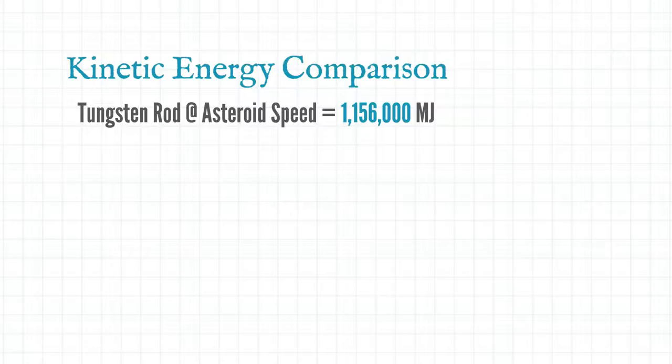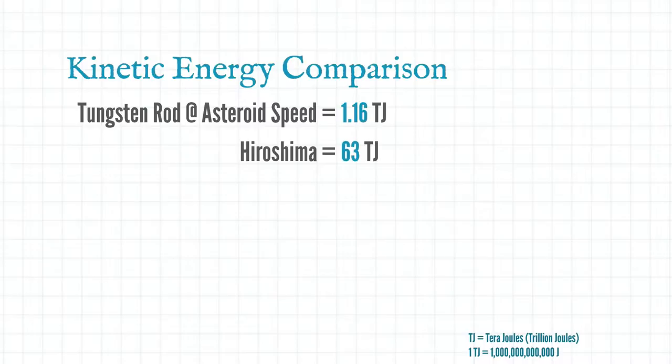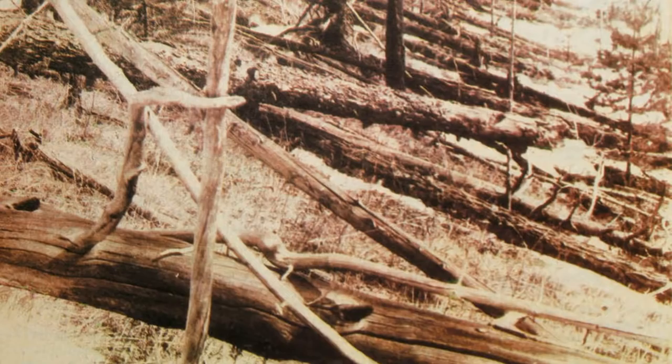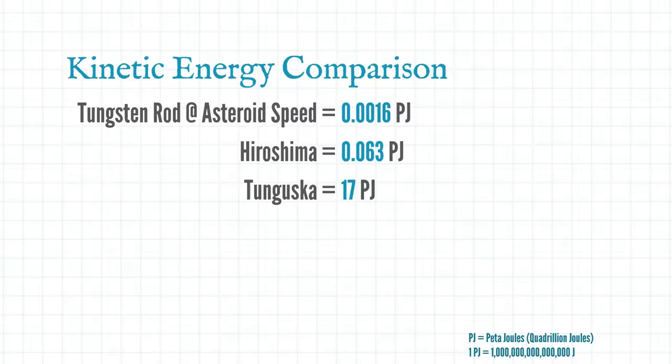Now before we get on to the relativistic bit there's a few other impacts we need to know about for comparison and in order to understand these big numbers we're going to have to up the scales again. Our tungsten rod traveling at asteroid speed is 1,100 gigajoules which is 1.16 terajoules. And now we can nicely compare it to Hiroshima which had the energy of 63 terajoules. Now we're going to move up another three orders of magnitude to petajoules which is basically a quadrillion joules. In 1908 a large explosion occurred in northern Russia. This is called the Tunguska event and it's generally attributed to the airburst of a meteor. This event flattened 2,000 square kilometers of forest and put out 17 petajoules of energy. This is thousands of times more powerful than the Hiroshima bomb.